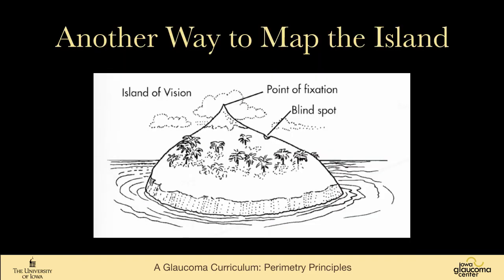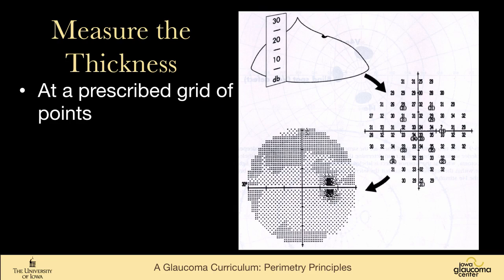The other way to map this island is to measure the thickness of the island at a prescribed grid of points. We take this pattern, overlay it over the island, and measure how thick the island is at all these different points, then color that with a grayscale. The blind spot corresponds to this area, and the higher the area, the lighter the gray. You can see the numbers are higher centrally and fall off in the periphery.